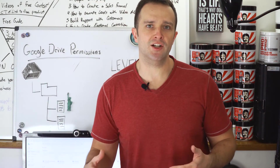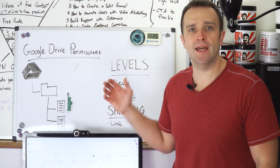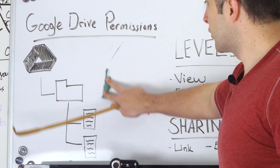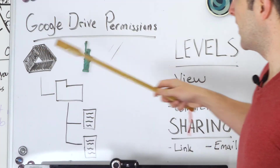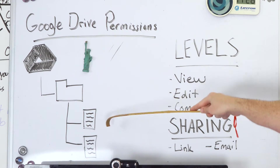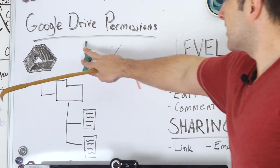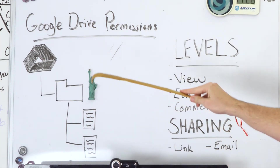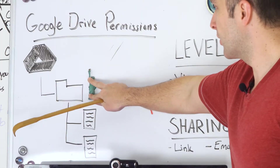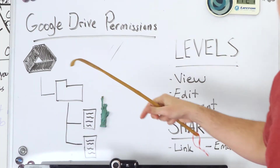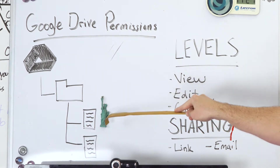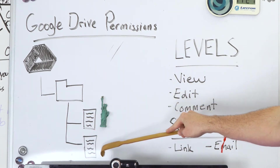To explain the fundamentals of sharing and permissions in Google Drive, I've brought Lady Liberty with me, along with my handy dandy backscratcher. So let's say we've got our Google Drive here, and in Google Drive we've got a folder, and in that folder there are two files. If we give Lady Liberty access to the folder, she automatically gets access to the two files. If you want to restrict access to just one file, you would set permissions at the file level — she's got access to this file but does not have access to the second file.